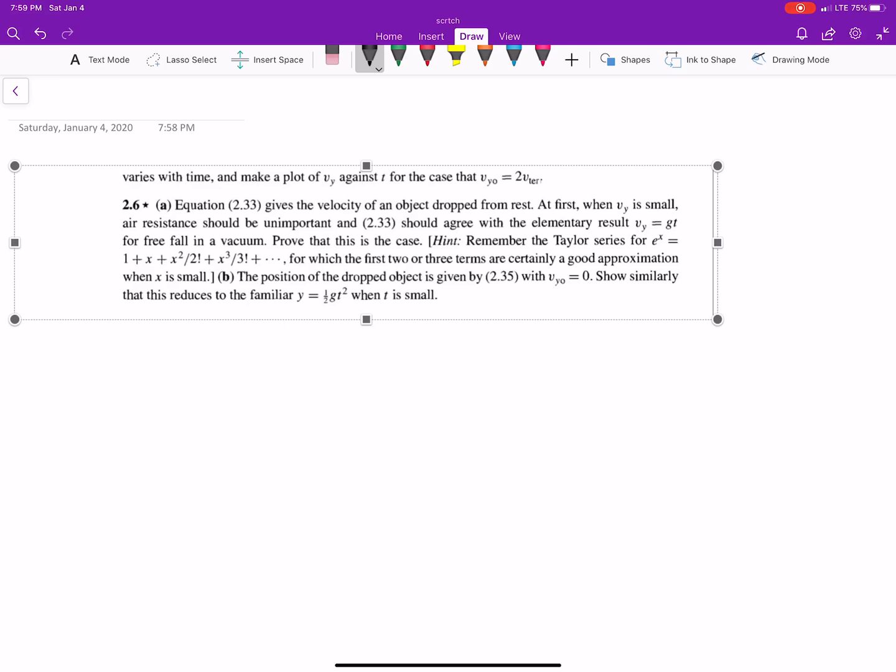It gives the velocity of an object dropped from rest. At first, when Vy is very small, air resistance should be unimportant, and equation 2.33 should agree with the elementary result Vy equals g times t for free fall in a vacuum.